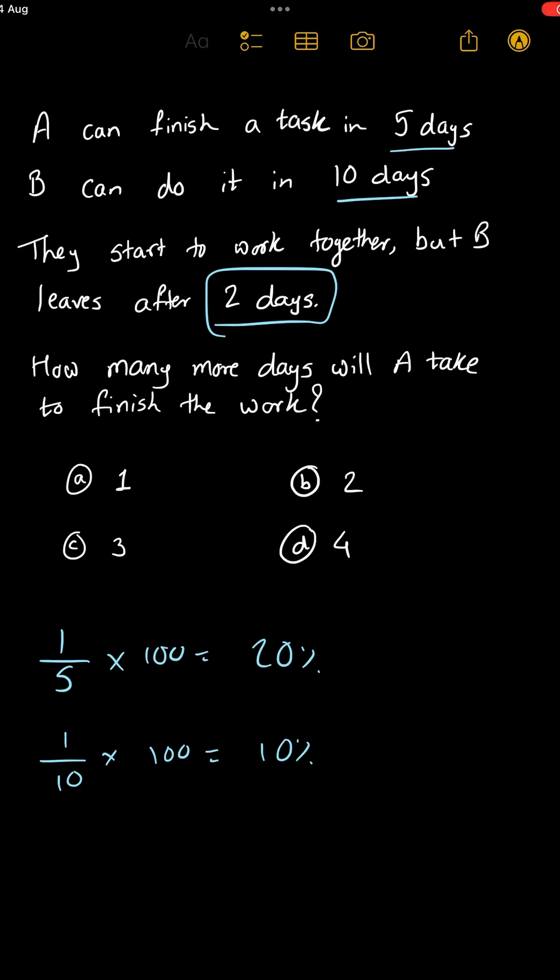So if they work together in a single day they can finish 30% work. They are saying they have worked together for 2 days. So 30 into 2, 60% of the work is already completed.